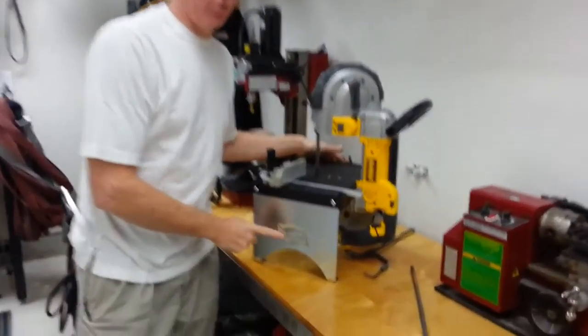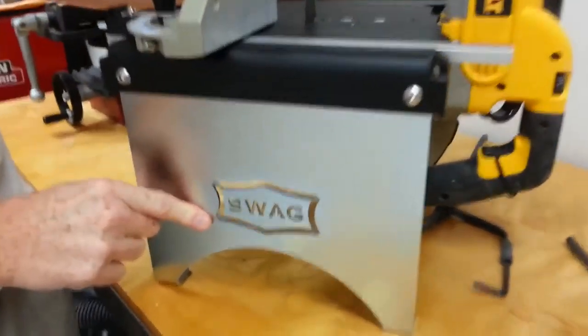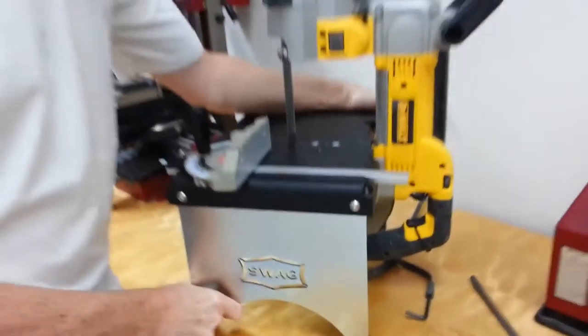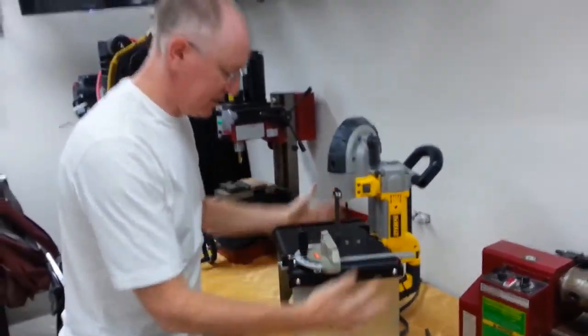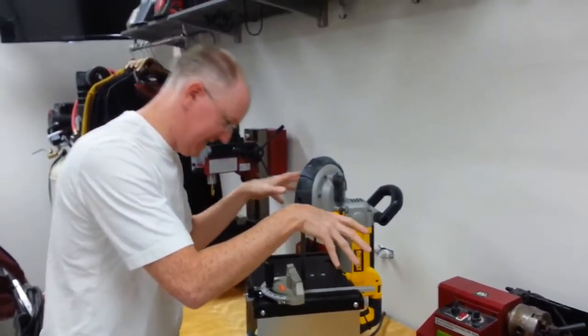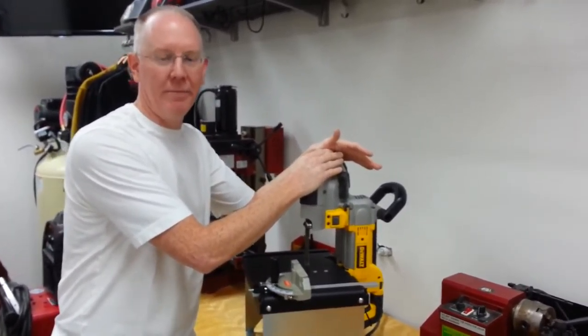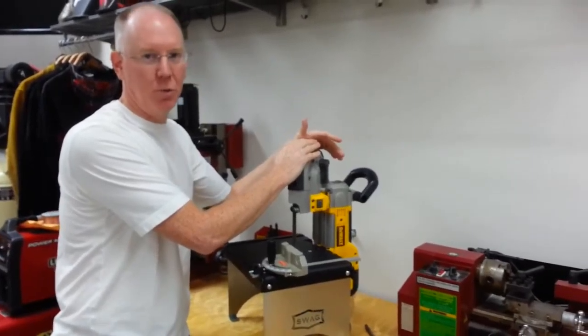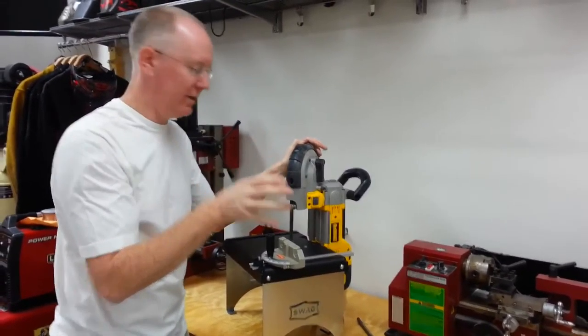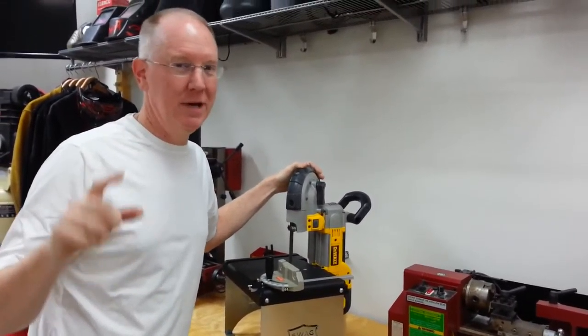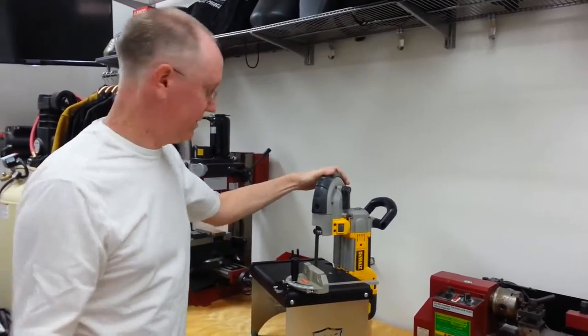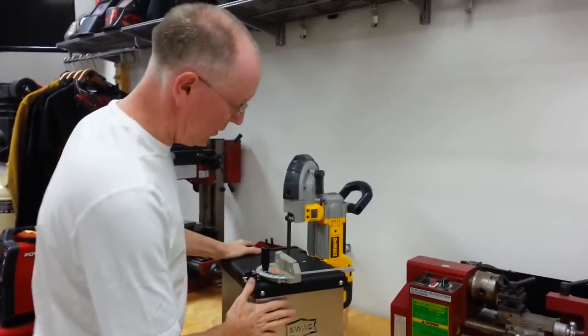There's a company called Swag Offroad. There's SwagOffroad.com I believe it is. And they make this little table. This is a table specifically designed for these portable metal cutting band saws. It works with a bunch of the DeWalt's and it works with a couple other brands. It does not work with the cheap $79 Harbor Freight ones. But, here's what I want you to see.